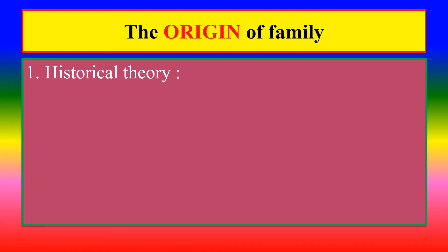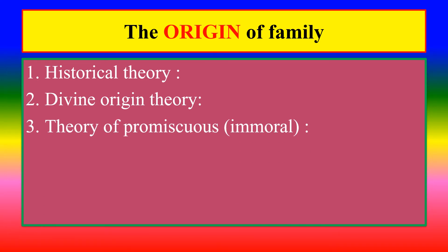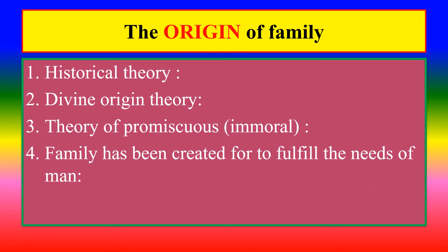Regarding the origin of family — first, the historical theory: from various historical evidence, including Egypt and the Indus Valley civilization, family was created from the ancient period. Second, the divine origin theory, which is a religious theory: according to this, family was created by God — for example, the Holy Bible's first family, Adam and Eve. Third, the theory of promiscuous or immoral behavior: in the beginning there was immoral behavior, which gradually developed into moral behavior. Fourth, family has been created to fulfill the needs of man, mainly biological needs.